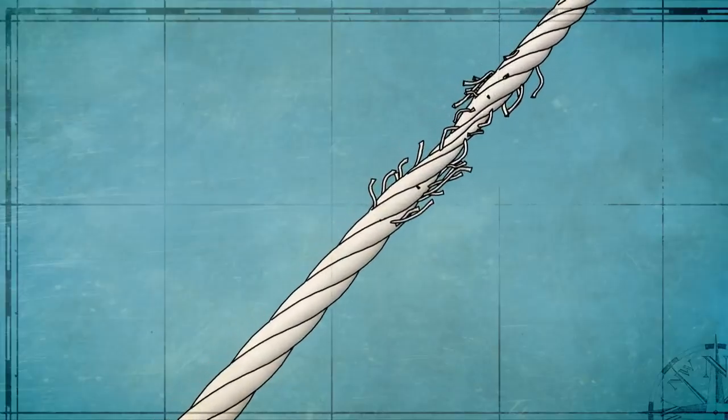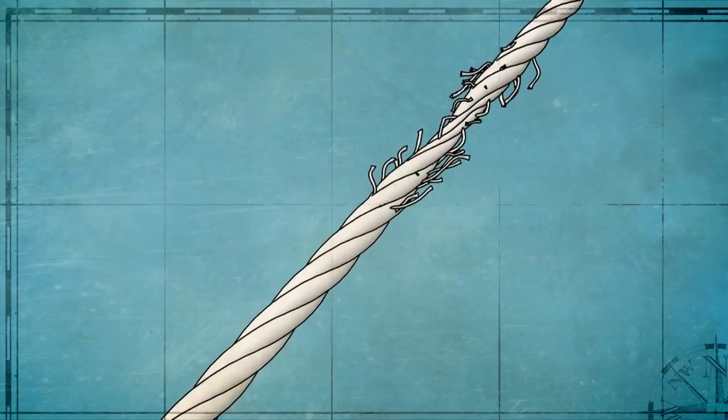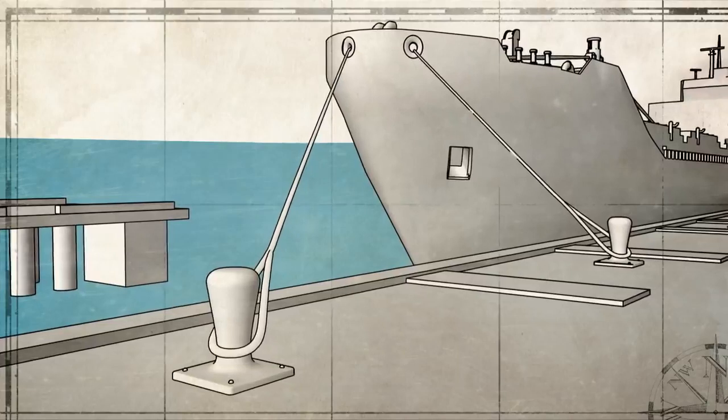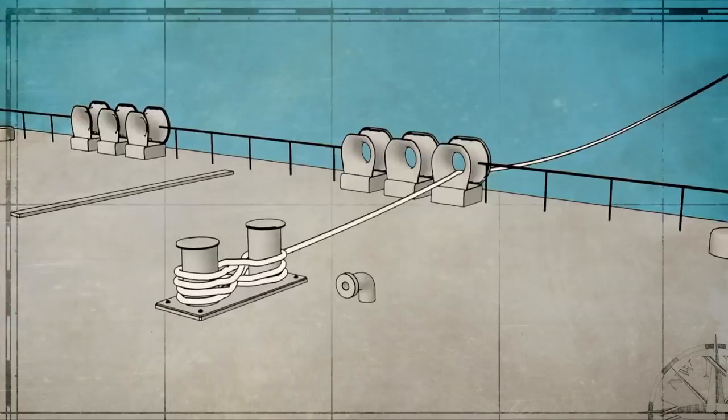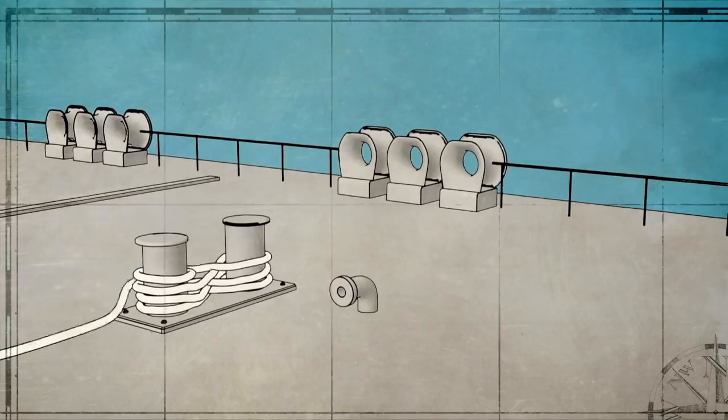Snapback is potentially the most deadly of all line handling hazards. A worn line, the wrong line, or a line under too much tension can part, snapback, and recoil, striking anything in its path with tremendous force.